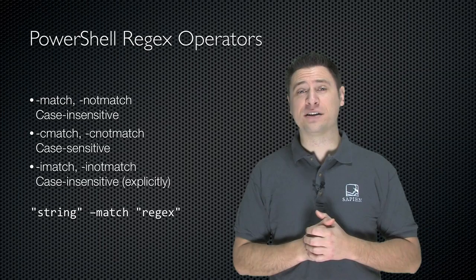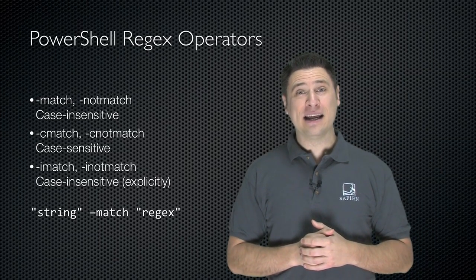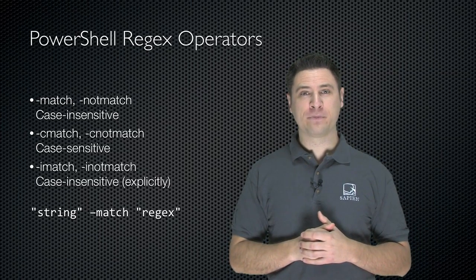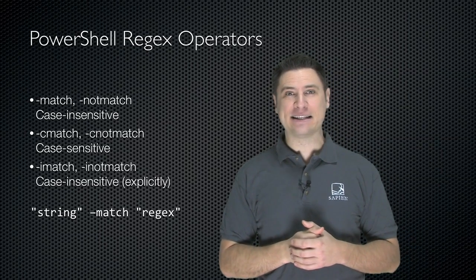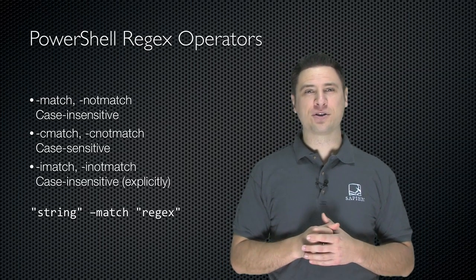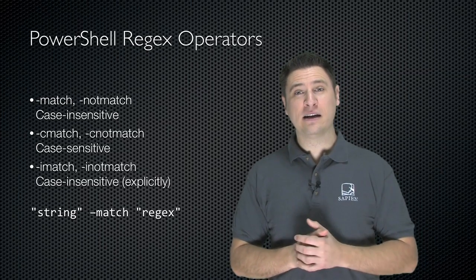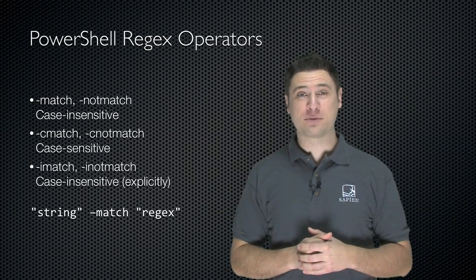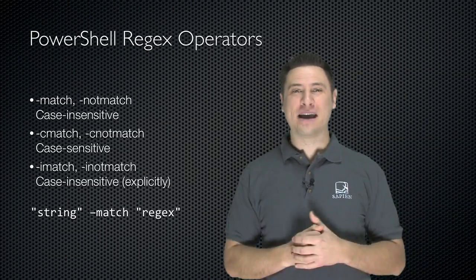PowerShell does this with its regular expression or regex operators. Dash match and dash not match are case insensitive operators. Add a little C to the front: cmatch and cnot match are case sensitive operators. There's also an imatch and inot match which are case insensitive. You give it a string, give it the operator like dash match, and then give it the regular expression you want to test for, and it will tell you if that string matches.